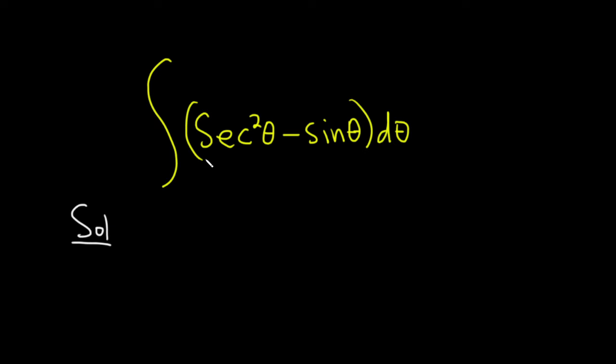So when we're integrating, we want to think backwards. When we're integrating secant squared, we have to think about what is a function whose derivative is secant squared. Well, recall, if you take the derivative, let's say with respect to x, of the tangent of x, that's going to be secant squared of x. So therefore, if you integrate secant squared, you should get tangent. So this will be tangent of theta.